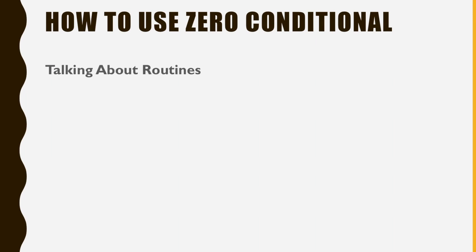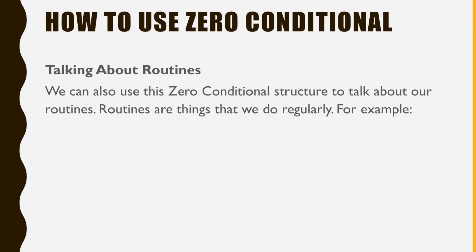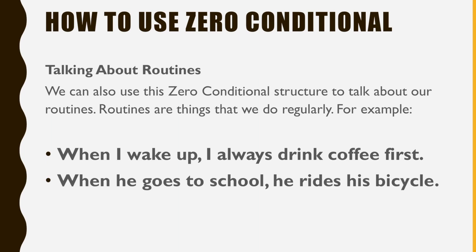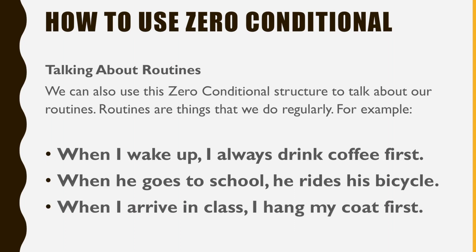Talking about routines. We can also use the zero conditional structure to talk about our routines. Routines are things that we do regularly. For example, when I wake up, I always drink coffee first. When he goes to school, he rides his bicycle. When I arrive in class, I hang my coat first.